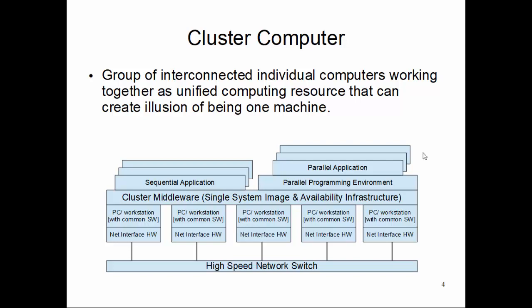You can actually do programming — you can run your sequential traditional programs, or if you want to take advantage of this kind of system, you make software with parallel programming concepts to run faster applications. From the hardware point of view, it has several computers connected through a high-speed network switch. Between hardware and software, this system provides something called cluster middleware, whose sole purpose is to give a single system image and availability infrastructure.